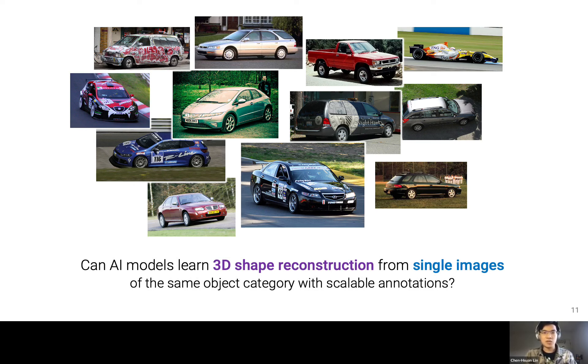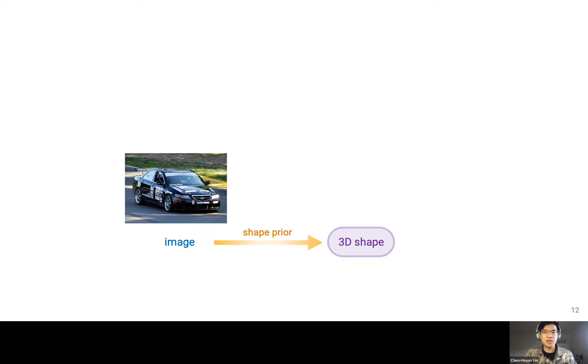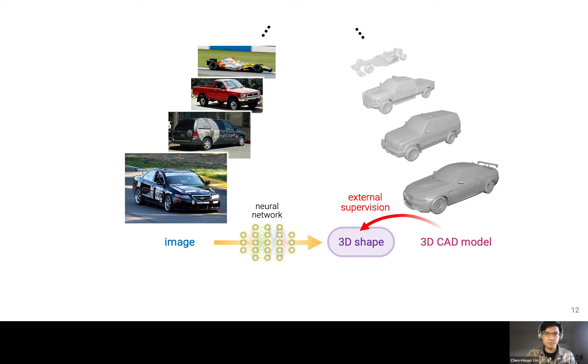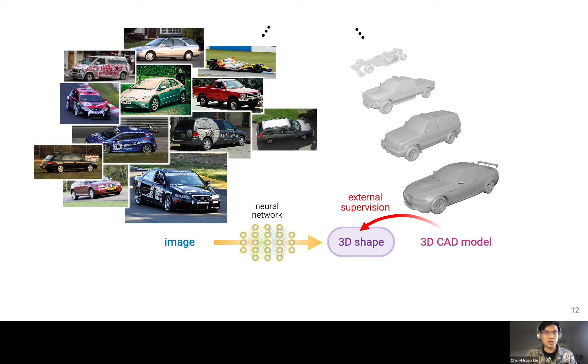If we look at an image collection of objects belonging to the same class, even without seeing the same object twice, we have a good sense of the 3D shape variations to expect. We ask: can AI models learn to reconstruct 3D shapes just by looking at single static images as training data, potentially with scalable or practical annotations? Our goal is to learn a prior of 3D shape space so that given an input image, the network can predict the corresponding 3D shape — parameterized by a neural network.